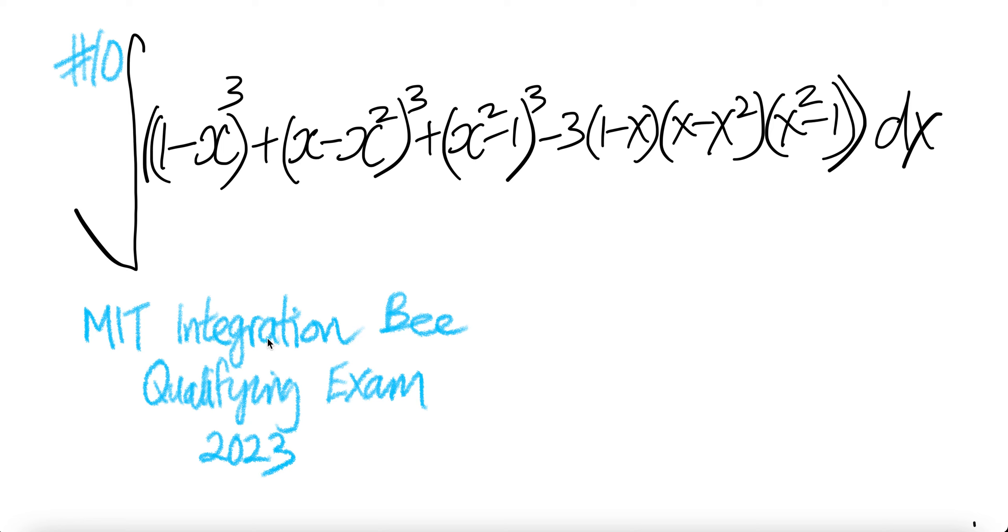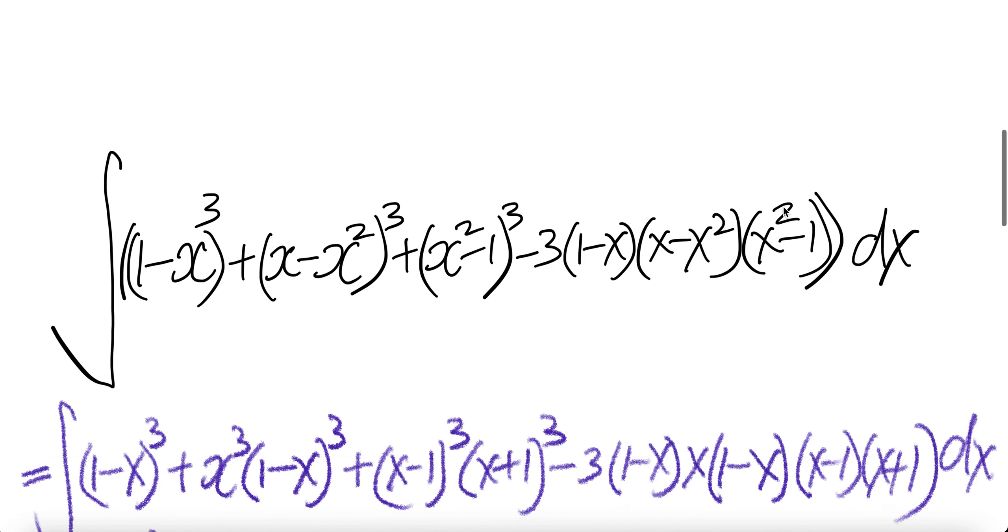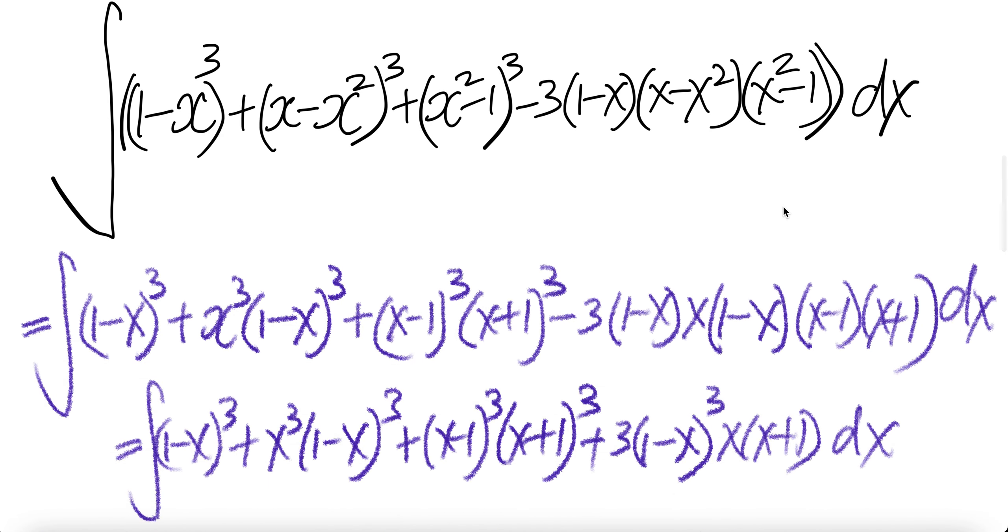Problem 10, MIT Integration B qualifying exam 2023. Let us get the integral of this. Now let us pull out a factor of x. You get x times (1-x) cubed. So bringing x out, you get x³ times (1-x)³.